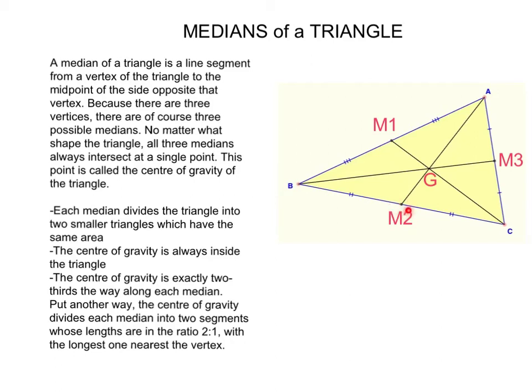We also say that M2 is equidistant to B and C because M2 is at equal distance from B and from C.